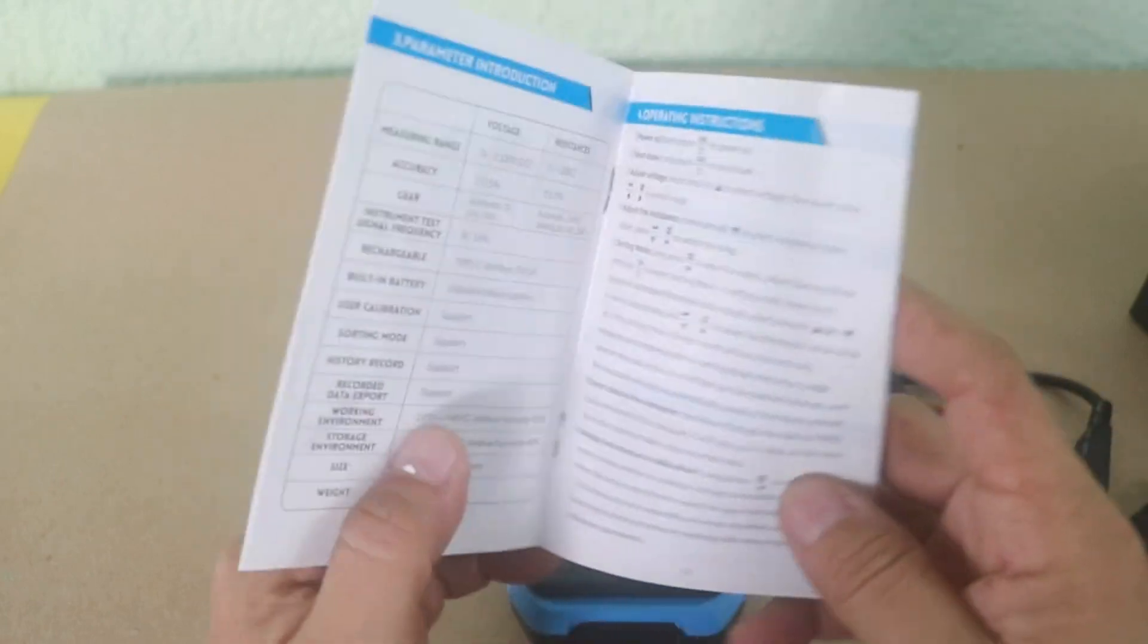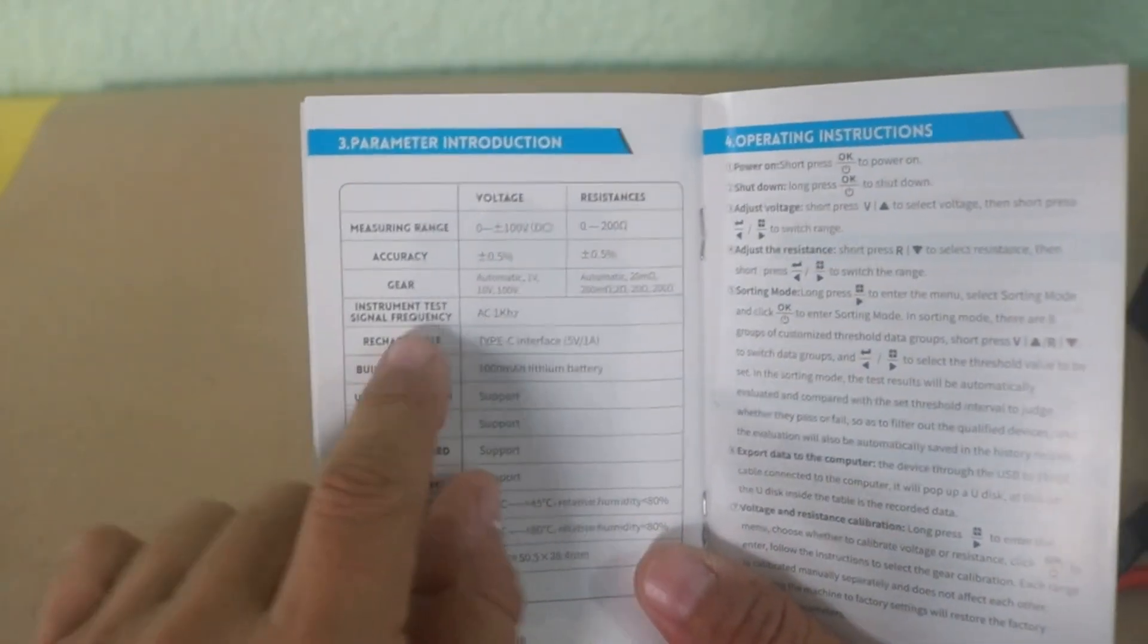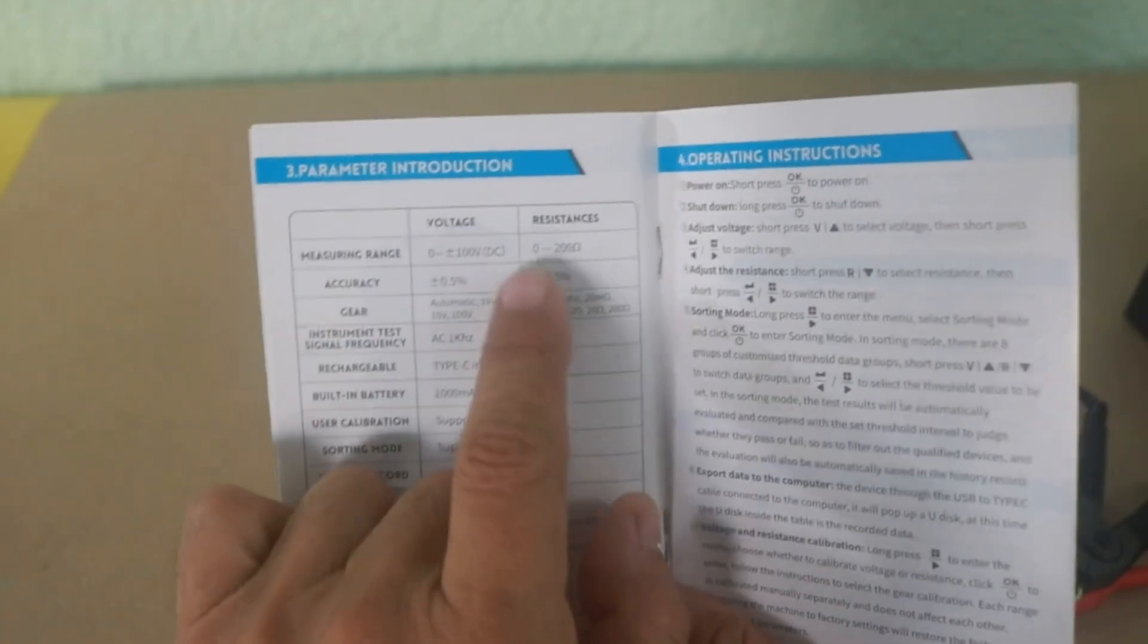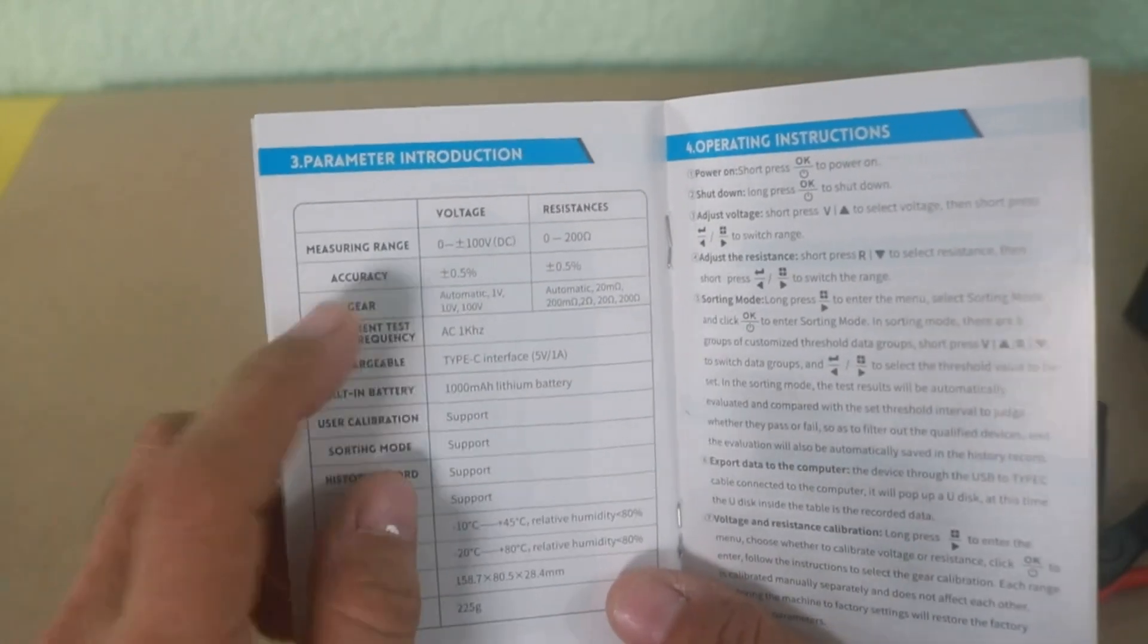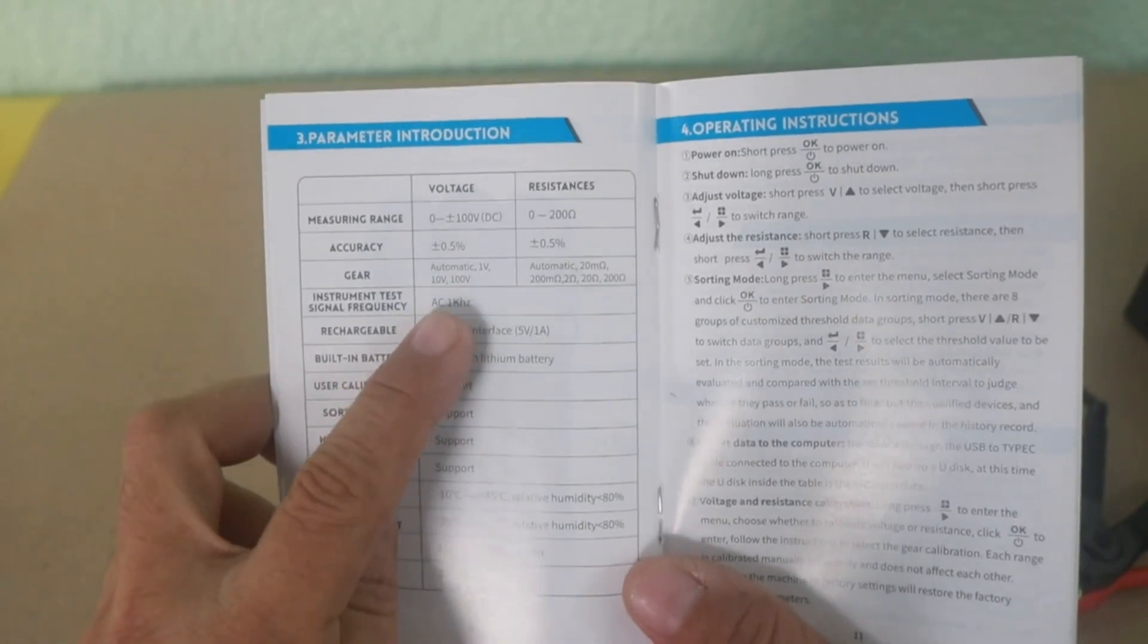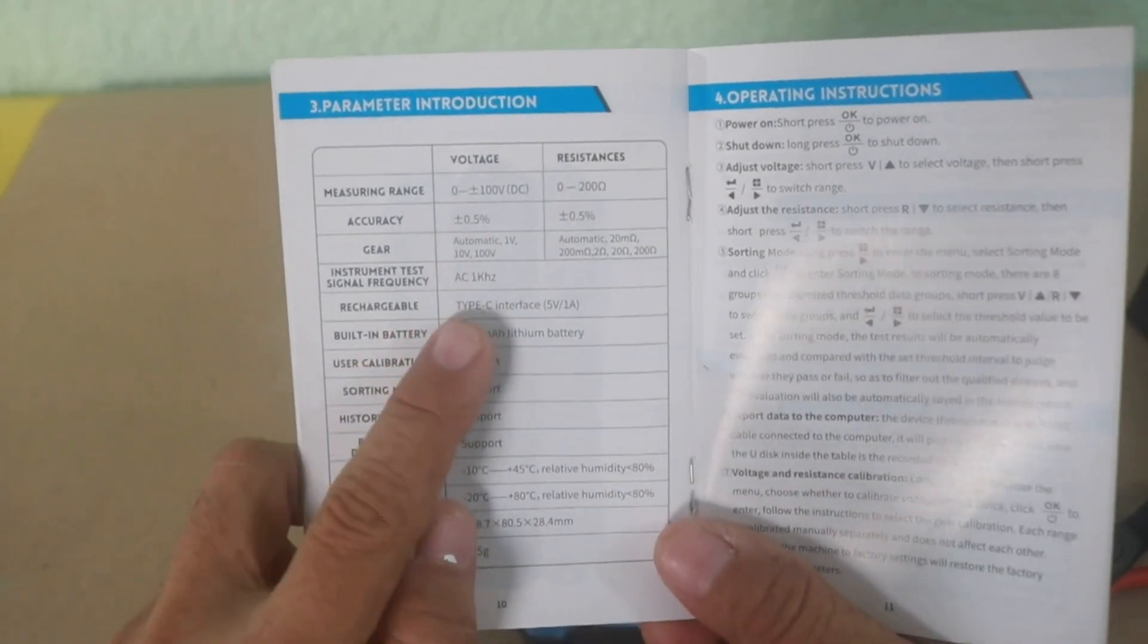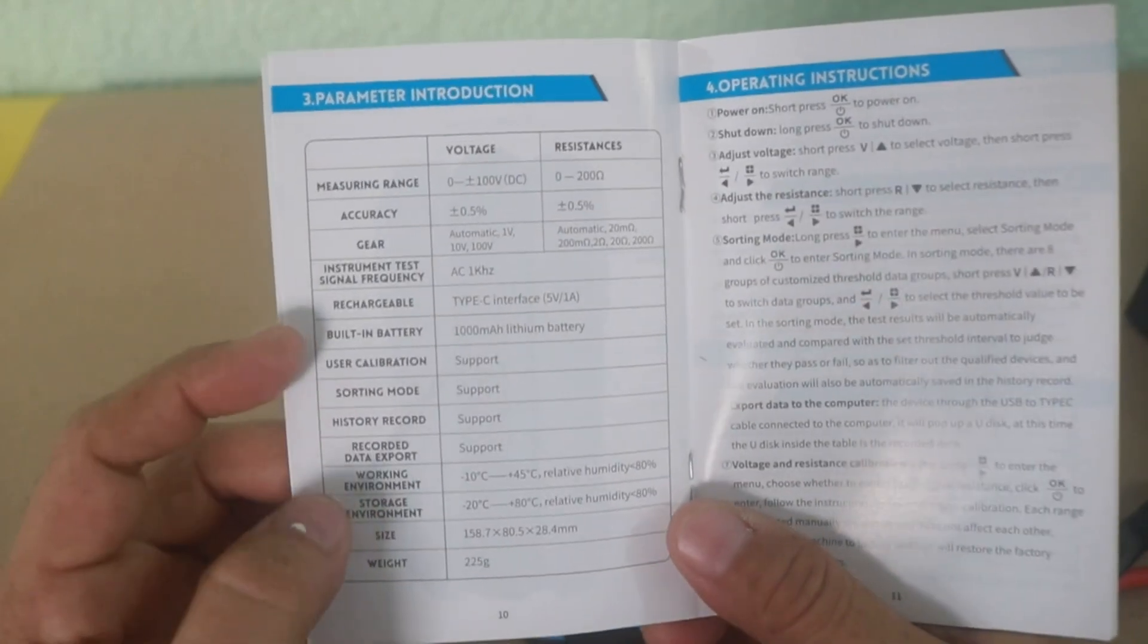Here we have some of the parameters of this device. It can check batteries with a voltage up to 100 volts and resistances from 0 to 200 ohms, supposedly with an accuracy of 0.5%. And this uses the method of AC 1 kHz for testing the resistance. As we said before, it is rechargeable, Type C interface and the battery is 1000 mAh.